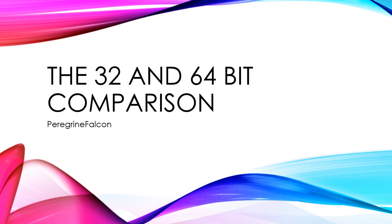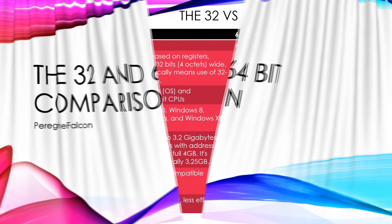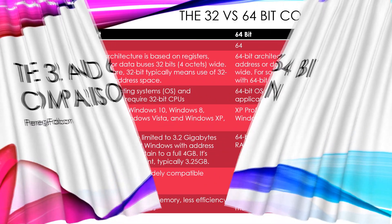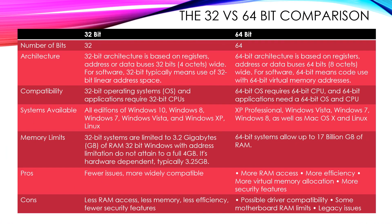Today I'm going to talk about the 32 and 64-bit comparison — which one is better. In a 32-bit operating system there are 32 bits, whereas in a 64-bit architecture there are 64. A 32-bit architecture is based on registers four octets wide, whereas 64-bit is based on registers, addresses, or data buses eight octets wide.